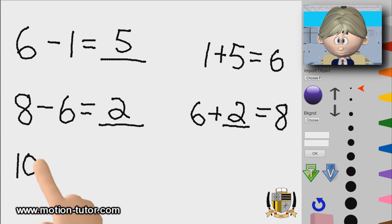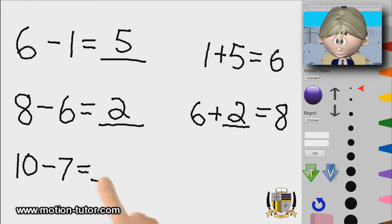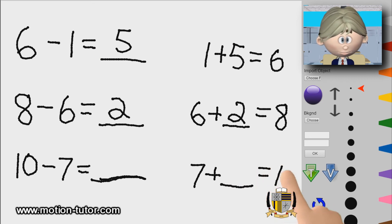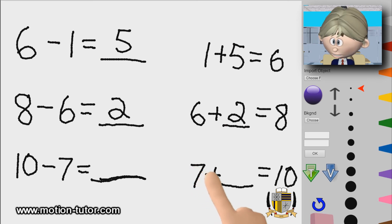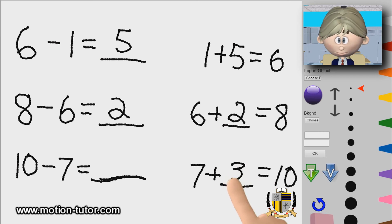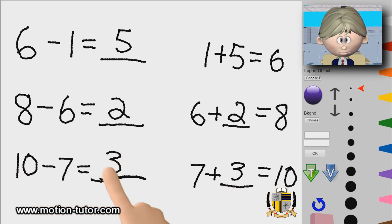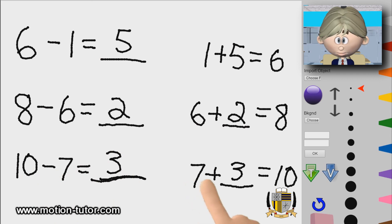Ten minus seven is equal to what number? That means seven plus that same mysterious number is equal to ten. I know seven, and I know I need three more to get to ten — seven, eight, nine, ten — and I get ten. So ten minus seven is three, because I know seven plus three is ten.